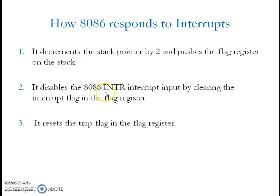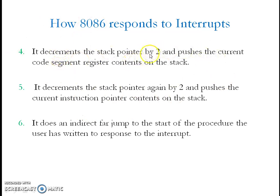Next, the INTR interrupt is disabled by means of the interrupt flag. If the 8086 microprocessor does not want to be interrupted by another interrupt, it will clear the IF flag. This interrupt service routine then gets executed, and it also clears the TF flag. Next, it decrements the stack pointer by 2 and pushes the current code segment register and current IP register contents onto the stack. The CS and IP combination holds the address of the next instruction where the interrupt occurred.